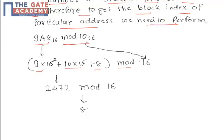to base 10, the result is 16. So the result is 2472 mod 16. You have to divide 2472 by 16, and whatever remainder you get is our answer.